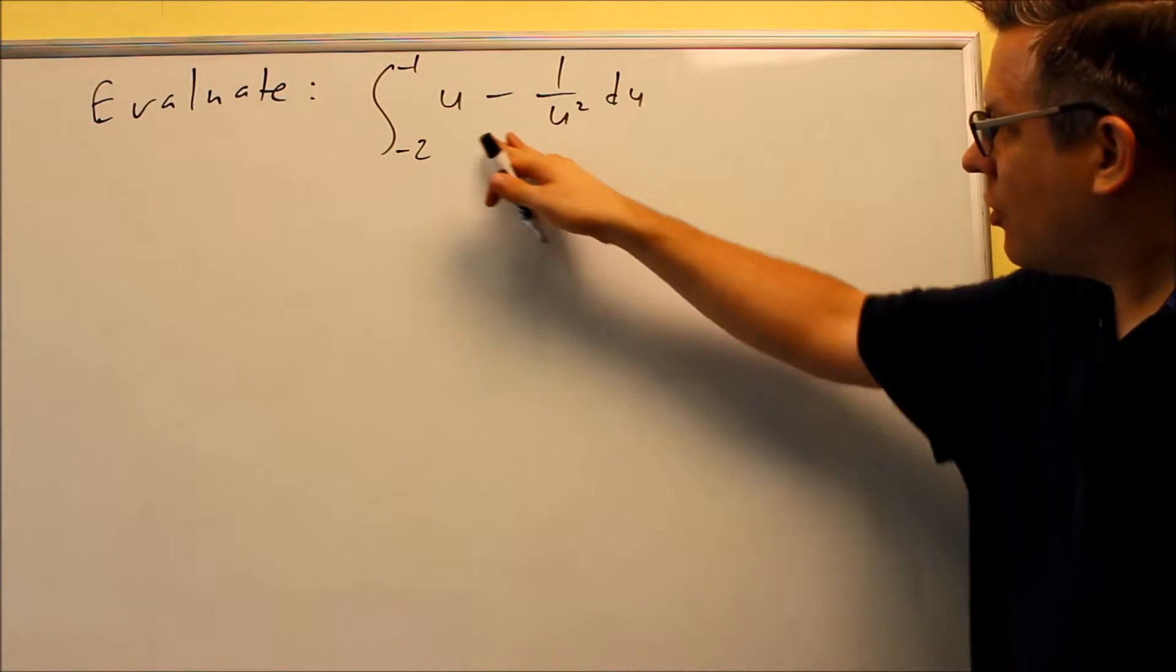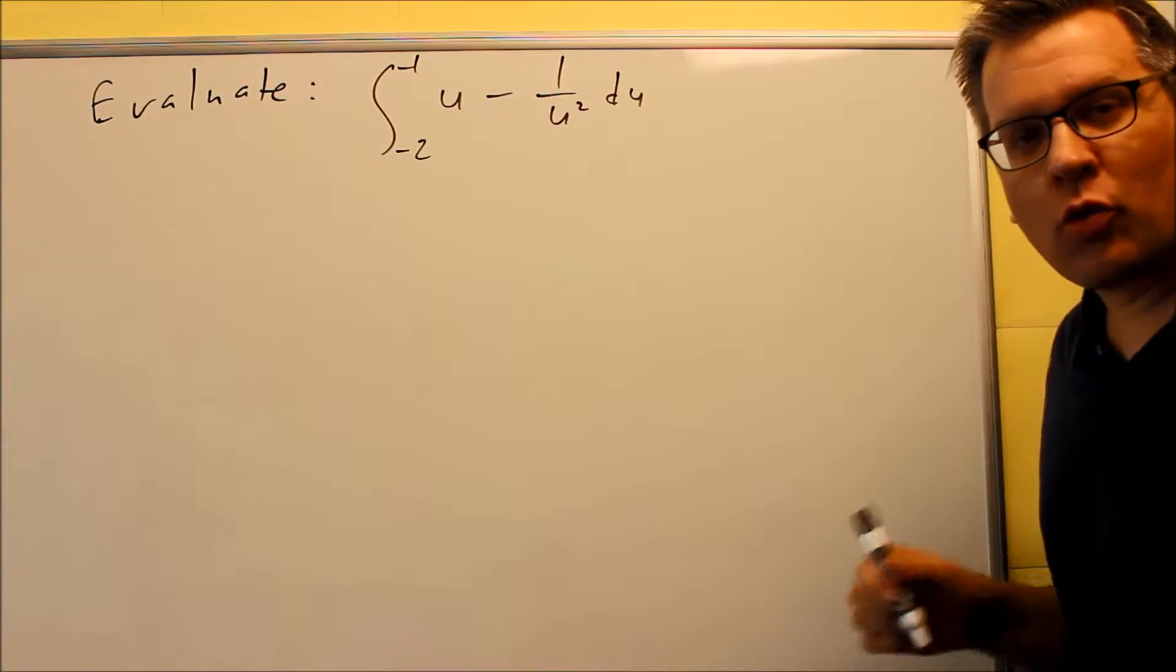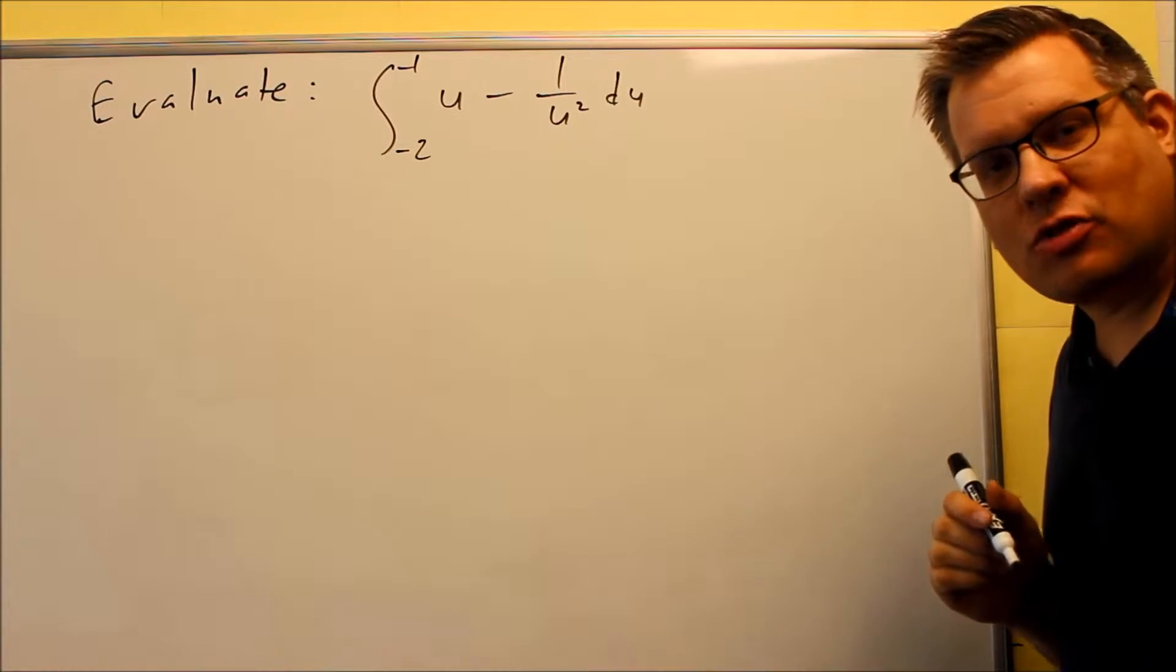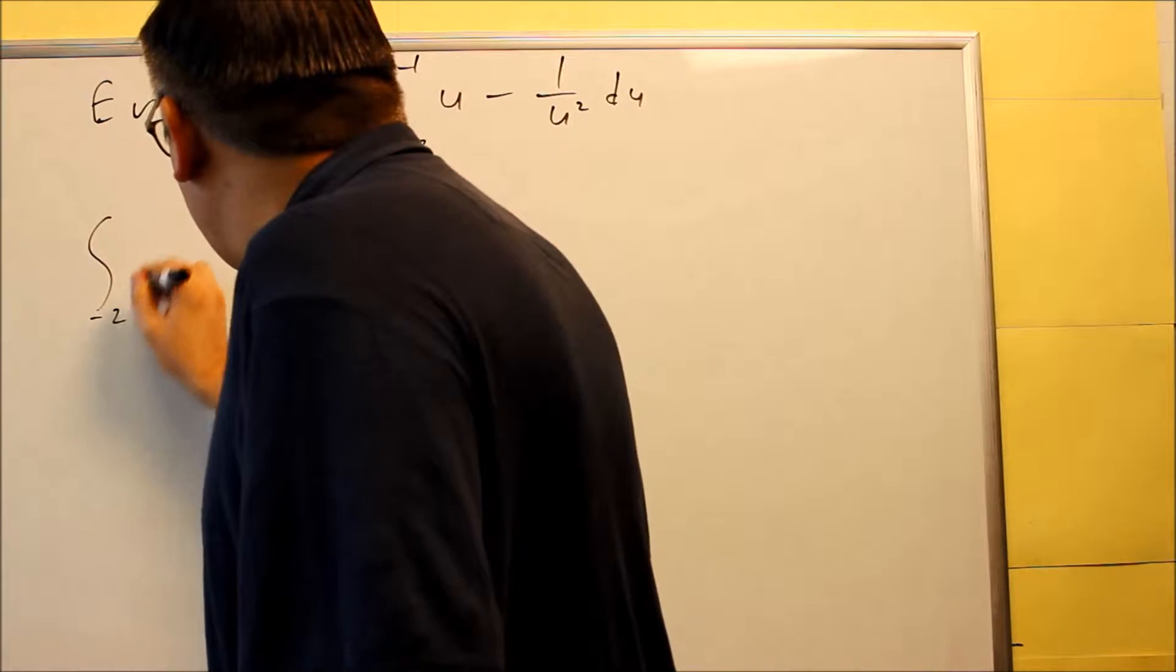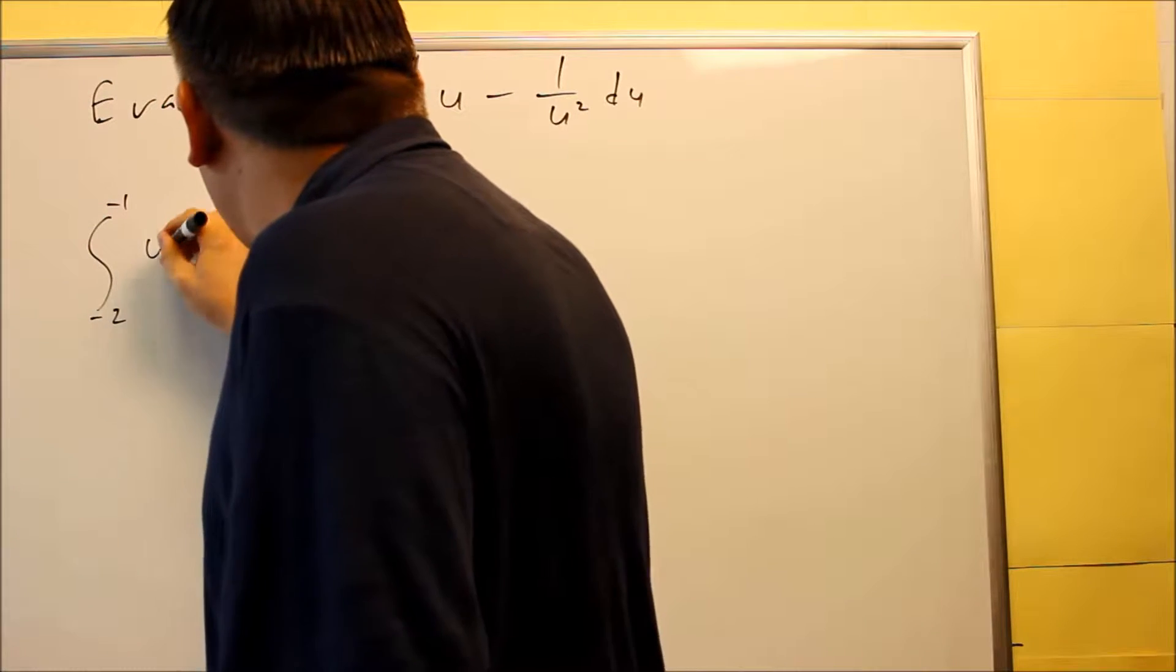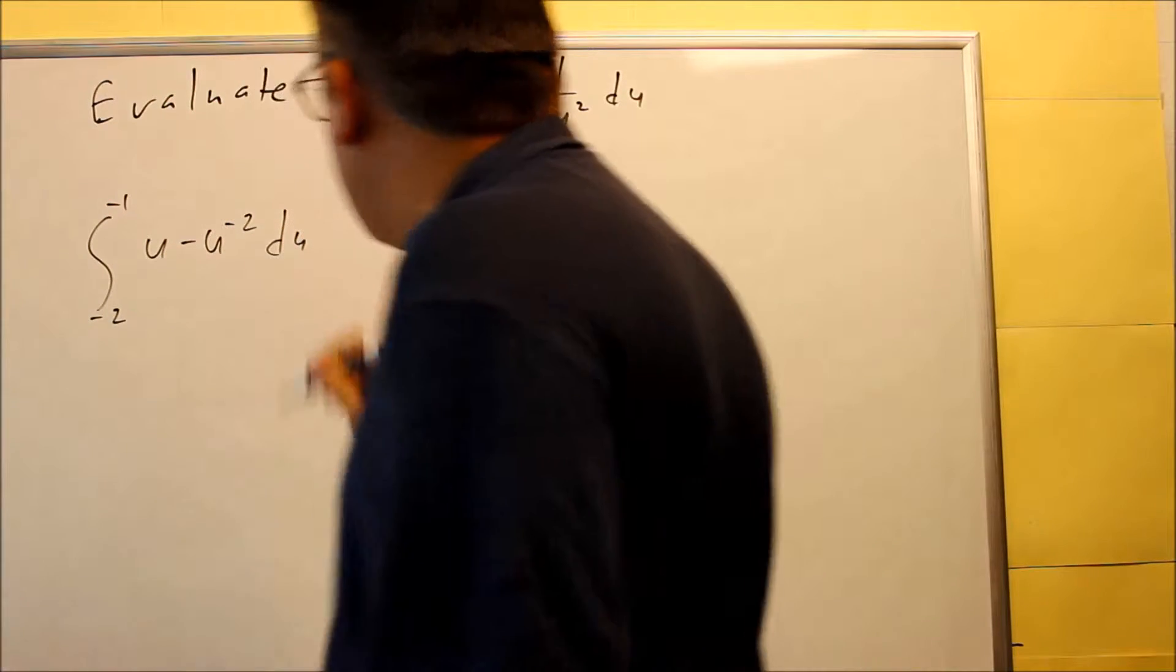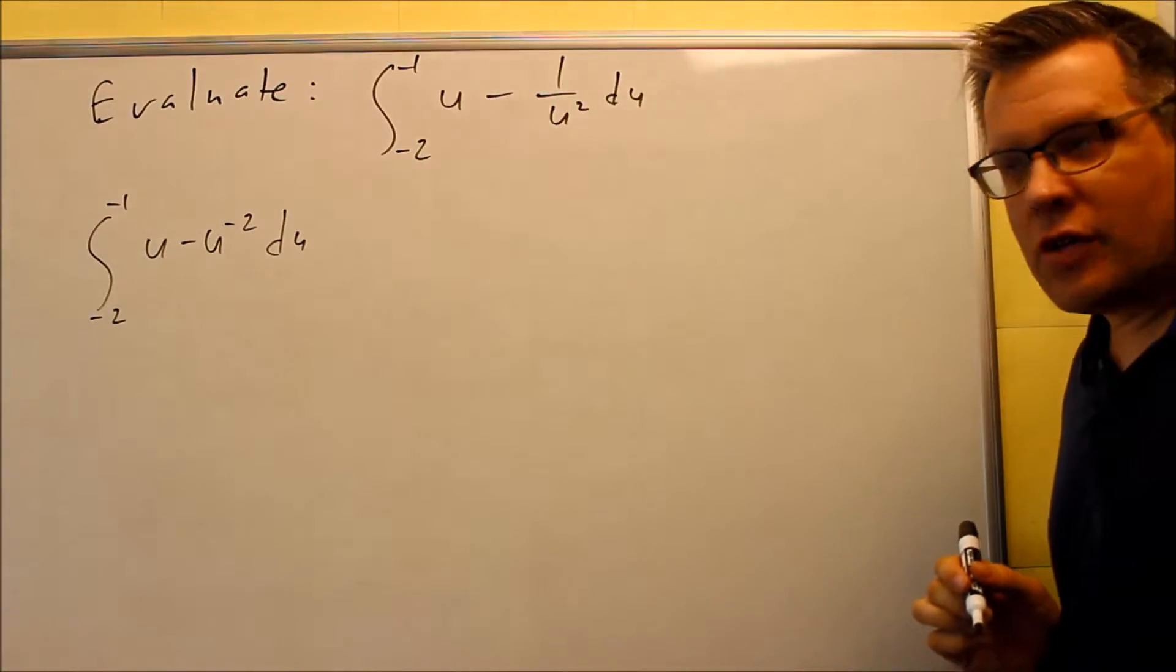Okay, so for this problem, because we have a fraction, it's better to rewrite this with negative exponents first before we find our antiderivative. So I'm going to do negative 2, negative 1, and I'm going to write it this way: u minus u to the negative 2.